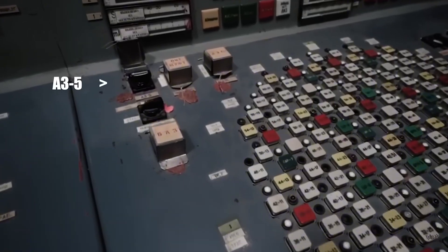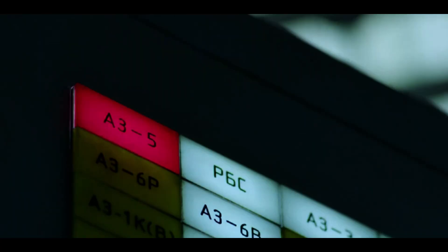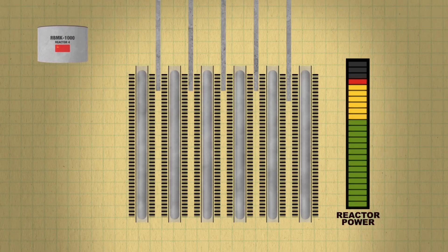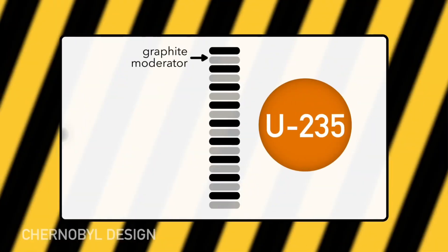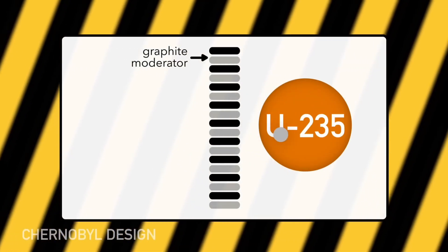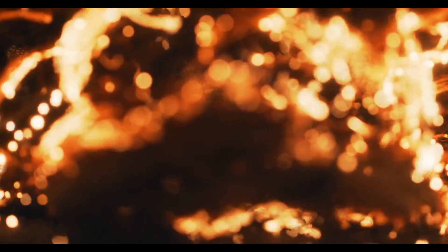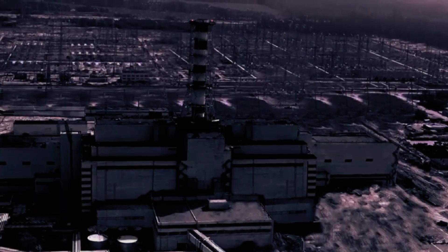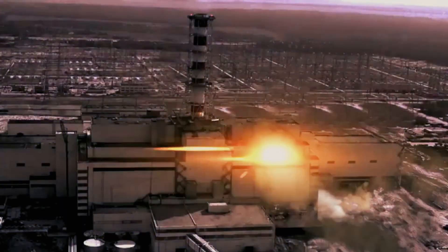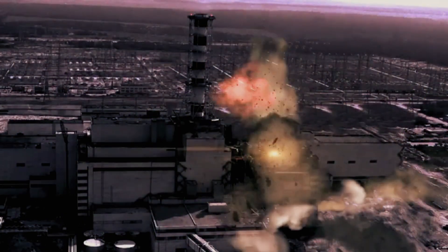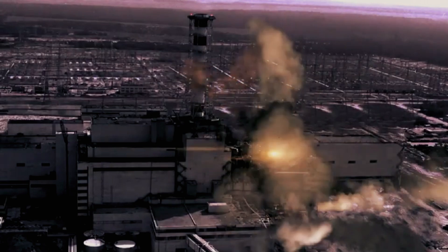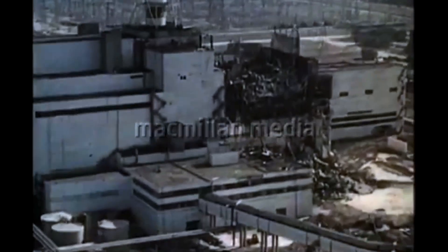During the test, when the emergency shutdown called scram was triggered, a critical design flaw made things worse. The control rods, which are supposed to slow the reaction, had graphite tips. When inserted, these tips displaced the water in the lower part of the reactor, briefly increasing the reaction instead of slowing it. This caused a sudden spike in power. At 1:23 AM, the surge blew apart the reactor core. The vessel ruptured and a deadly cloud of radiation was released. This was not just human error.